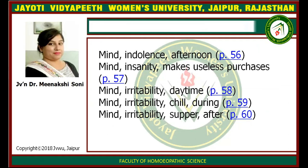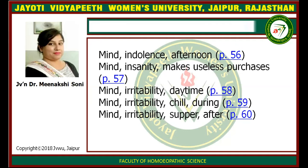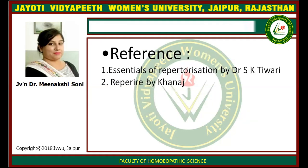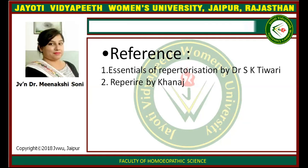Further mind rubrics include: indolence, insanity, and irritability. Irritability can be of different types — there are many types of irritability, such as daytime irritability and irritability during chill. There are many types of rubrics that you will find in the mind section. In this session you have seen the mind section of the repertory, in which you can find different rubrics under mind.